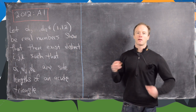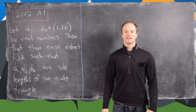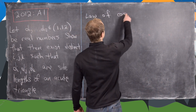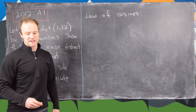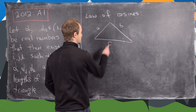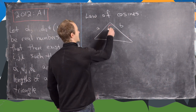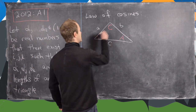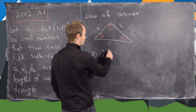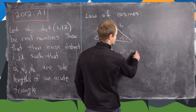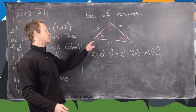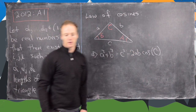Before we get going, we want to look at a fact which characterizes the side lengths of acute triangles, and it follows from the law of cosines. The law of cosines says that if you have a triangle with side lengths a, b, c and opposite angles A, B, C, then a squared plus b squared equals c squared minus 2ab cosine C, and you can rewrite this for any side length or angle.